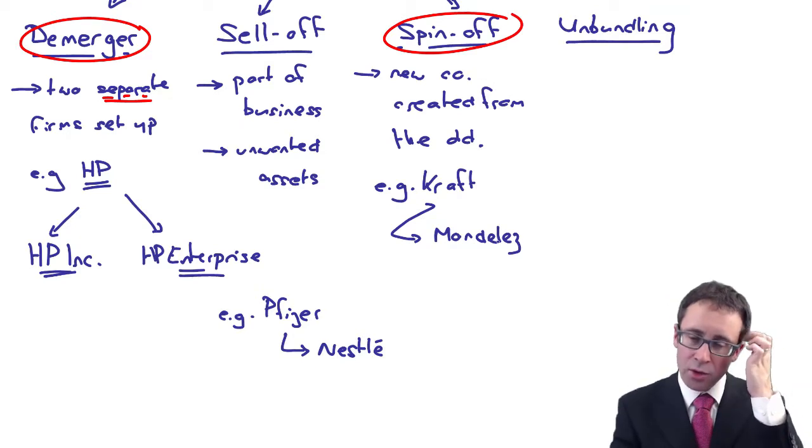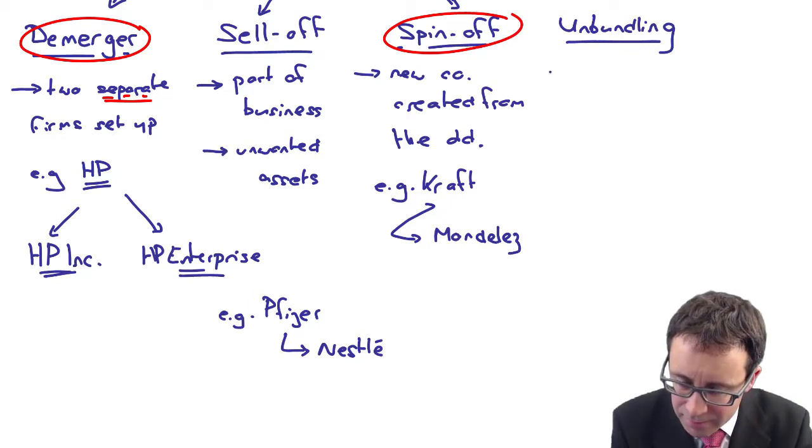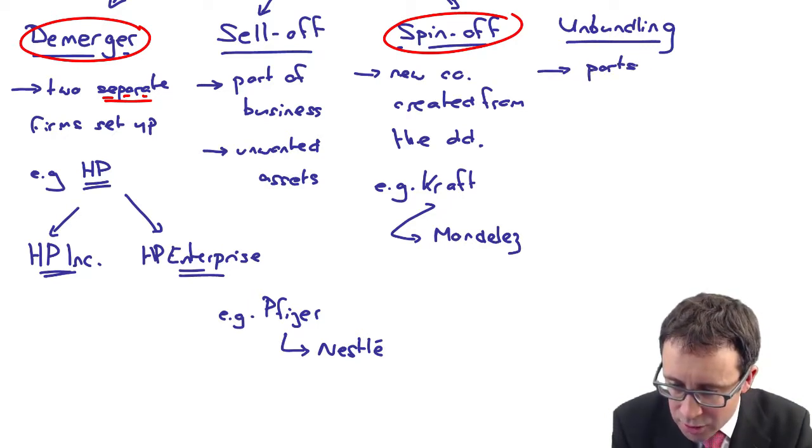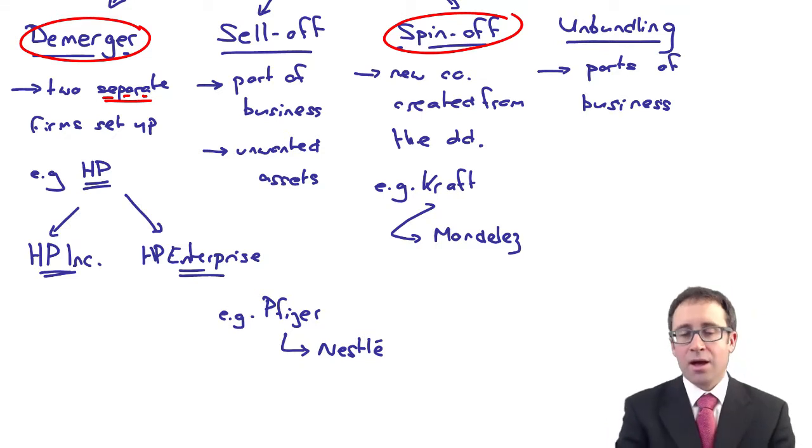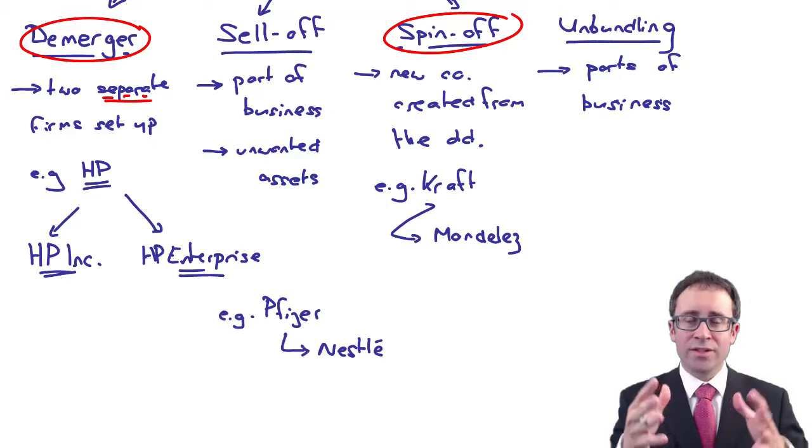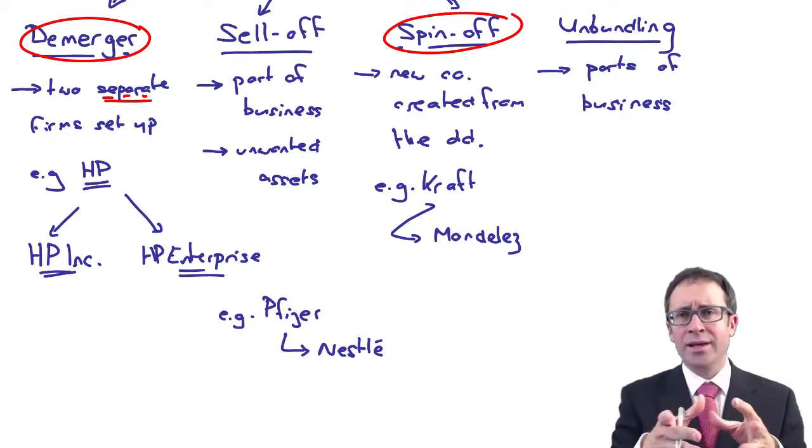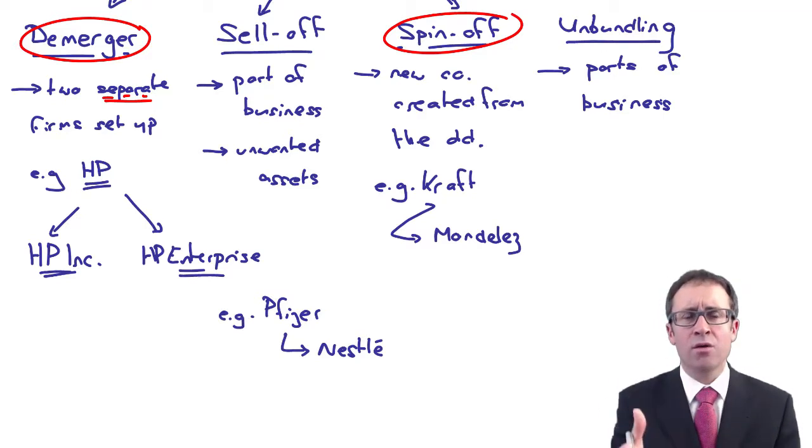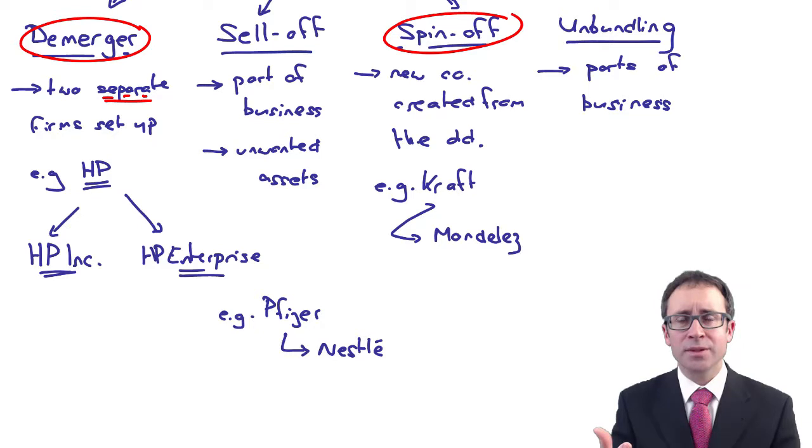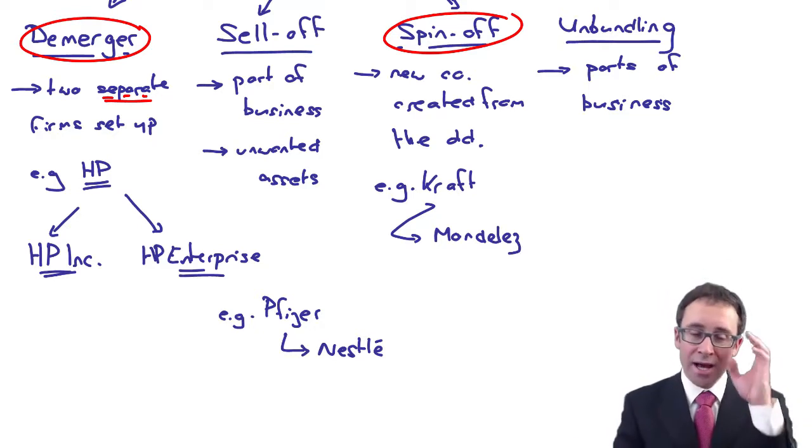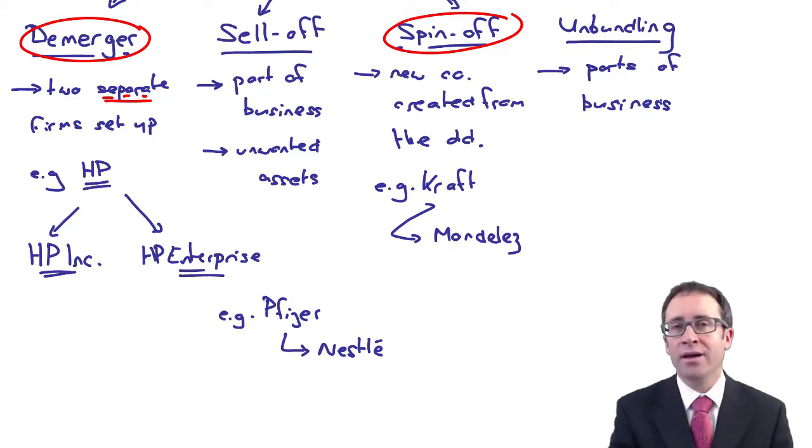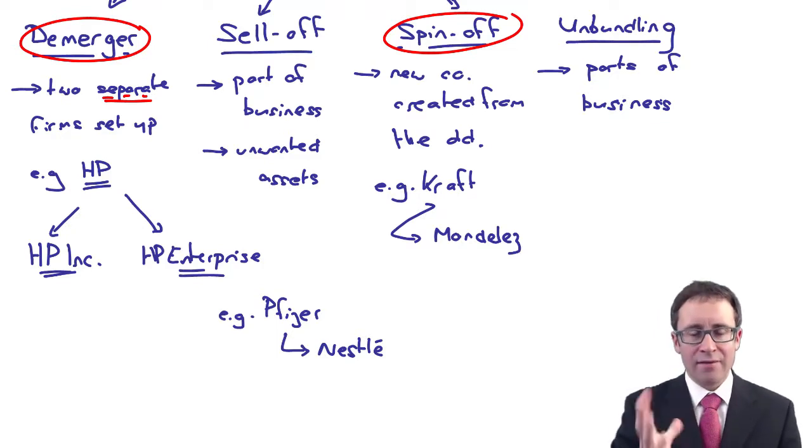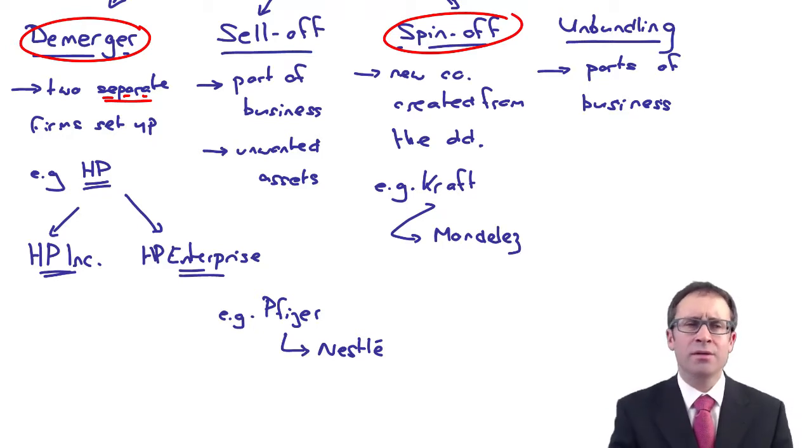When we're looking at unbundling, it's very similar to a sell-off. But that's just separating out parts of a business with a view to then selling them. A sell-off is saying this is the bit of the business I'm going to sell. Unbundling is taking more than one area of the business and trying to separate it out so it's much easier to sell that business. A sell-off and unbundling generate cash. Spin-offs and demergers don't generate any cash. These divestments will be subject to the Competition Commission, so that needs to be thought of as well.